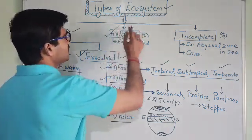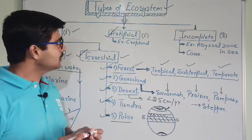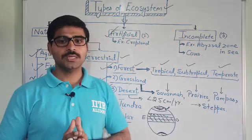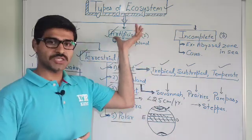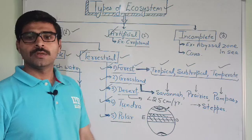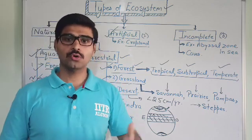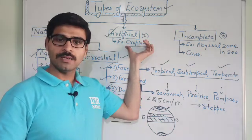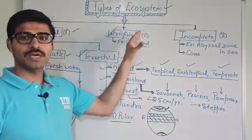The second broad category of ecosystems is the artificial ecosystem — ecosystems which are partially or fully regulated by human beings. For example, cropland is partially regulated: human beings decide what to grow and when to grow, but precipitation and soil type are natural. That is why cropland is called a partially regulated or artificial ecosystem.